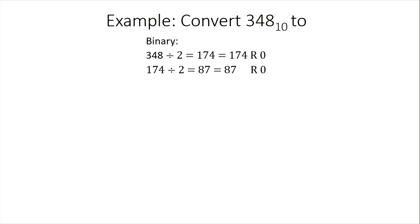Our new quotient is 87, so we will divide 87 by 2. We have 43.5, or 43 remainder 1. How did we get remainder 1? We just multiply the decimal part, 0.5, by 2. So 0.5 times 2 is 1. The quotient here is 43, so we will only divide 43 by 2, not 43.5 — only the quotient.